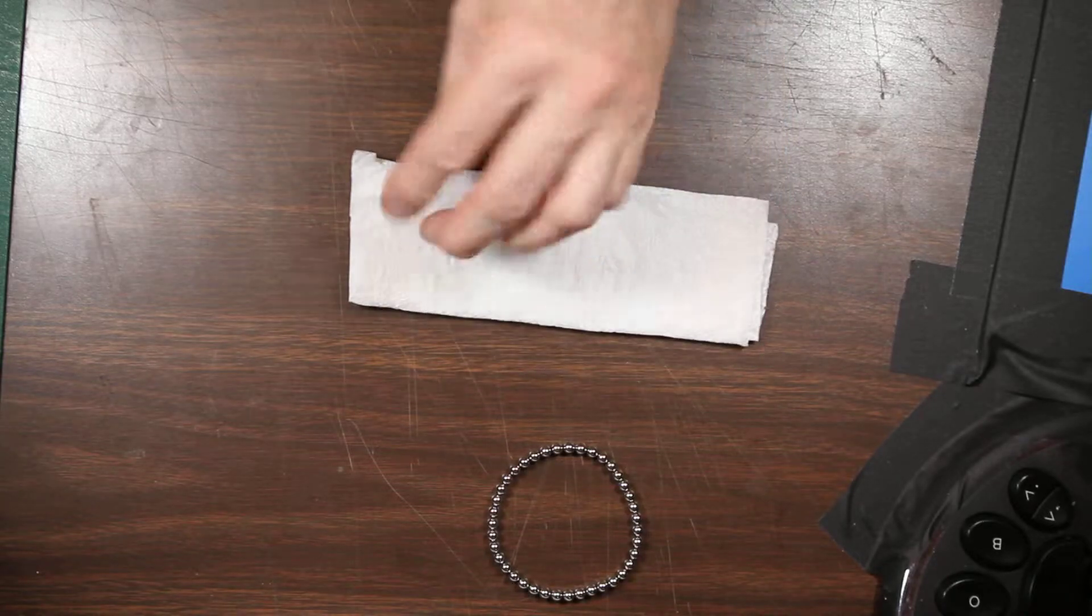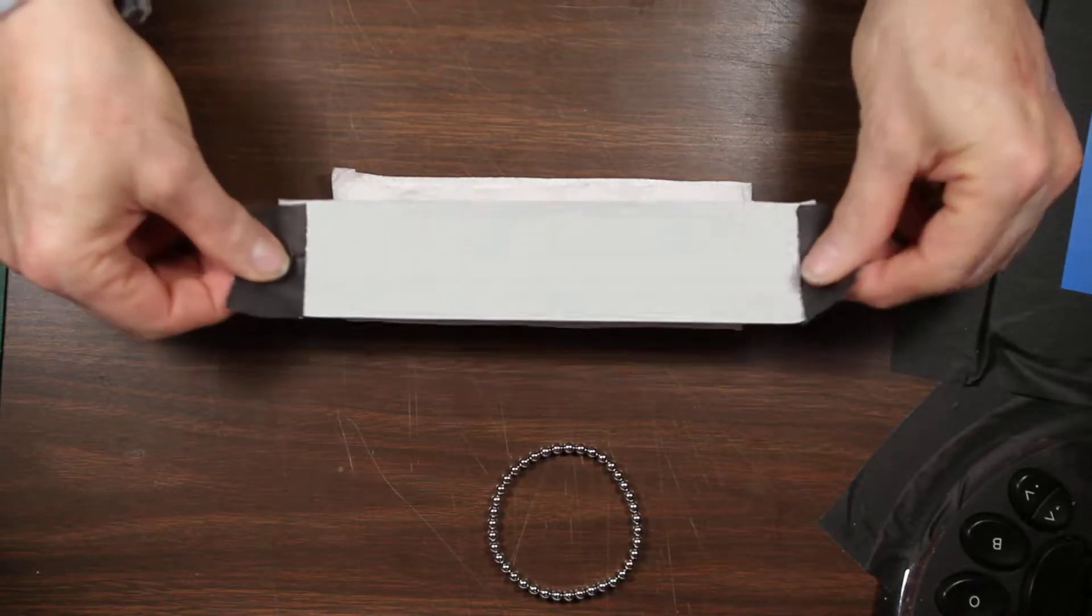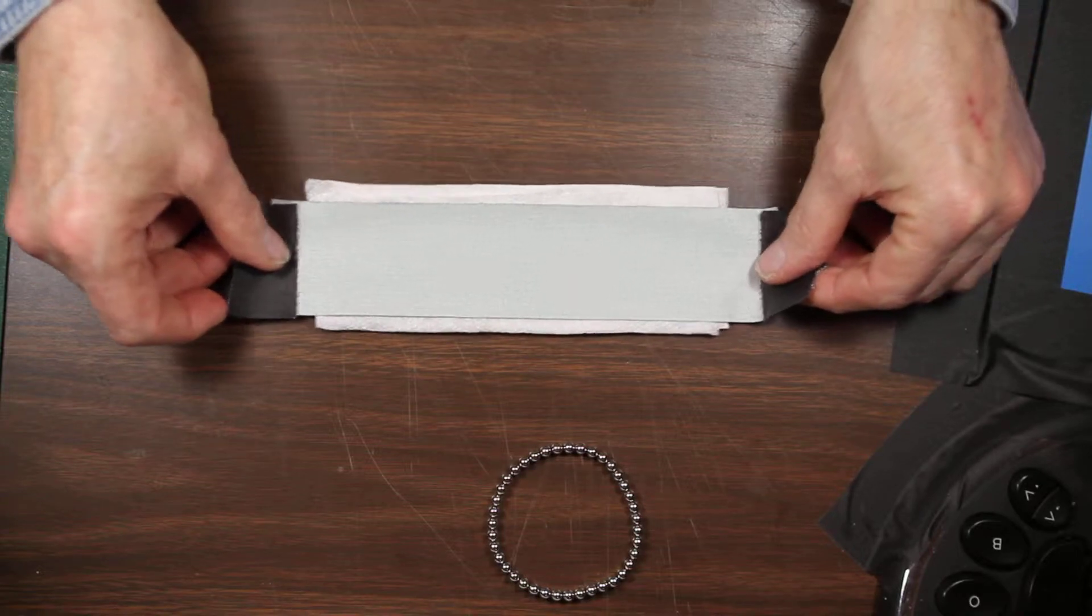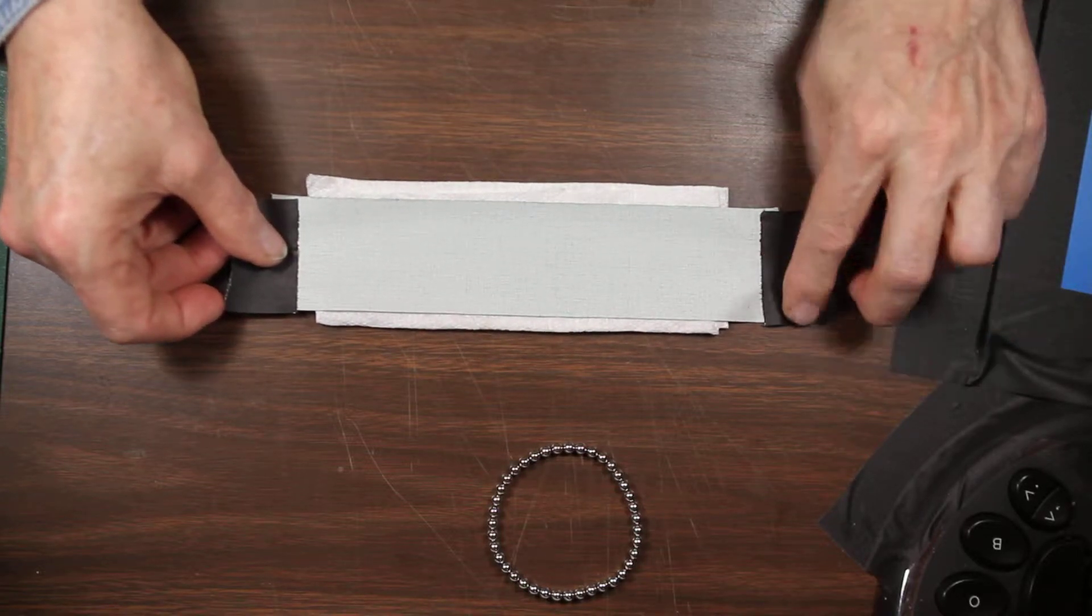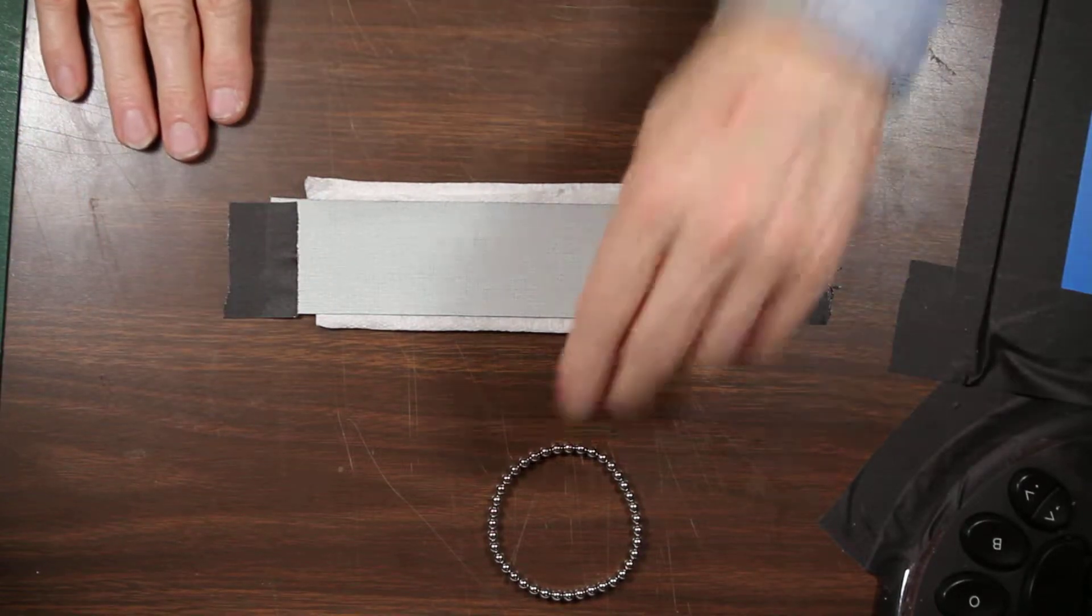So what I'll do is take some folded paper towel, lay that down on the table, then some tape. I use gaffer tape, although duct tape would work. This stuff is nice because it tears cleanly, and you tape it to the table with a couple short pieces of tape.